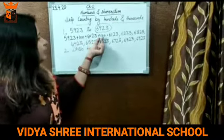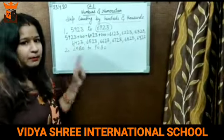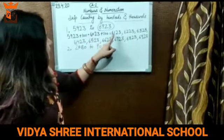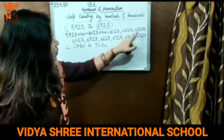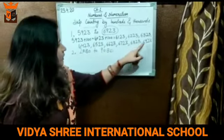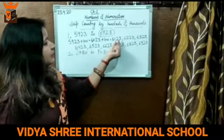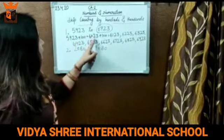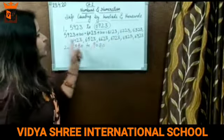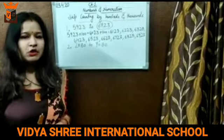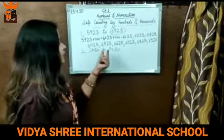Now here you can see only the hundreds digit changes. The digit which is in the hundreds place changes: 9, then 0, then 1, 2, 3, 4, 5, 6, 7, 8, 9. The units digit and the tens digit will remain the same — they will not change. In all the numbers, the ones place and tens place have 23, which remains the same. Only the hundreds place value will change when you are skip counting by 100.